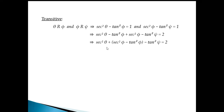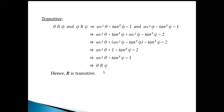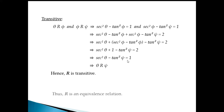From the equation: sec²θ plus (sec²φ minus tan²φ) minus tan²ψ equals 2. Since sec²φ minus tan²φ equals 1, we get sec²θ plus 1 minus tan²ψ equals 2, which gives sec²θ minus tan²ψ equals 1. This shows θ is related to χ. Since reflexive, symmetric, and transitive all hold, R is an equivalence relation.